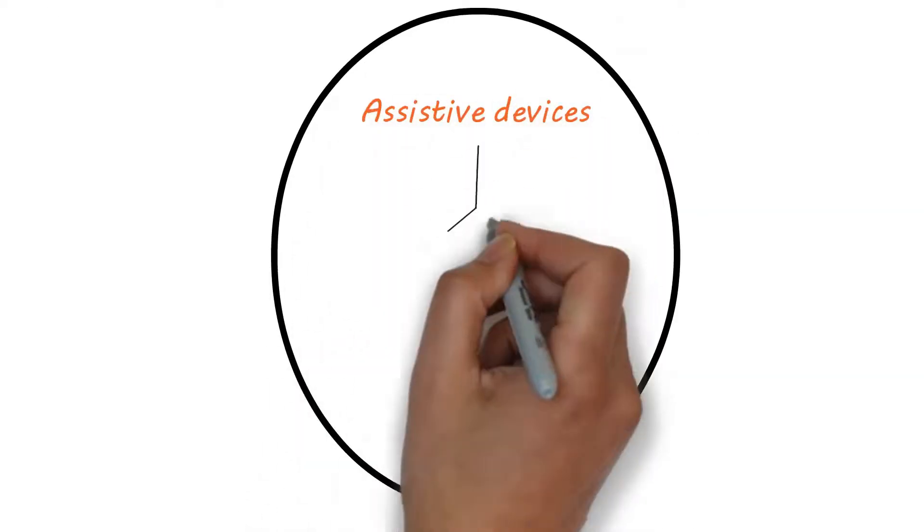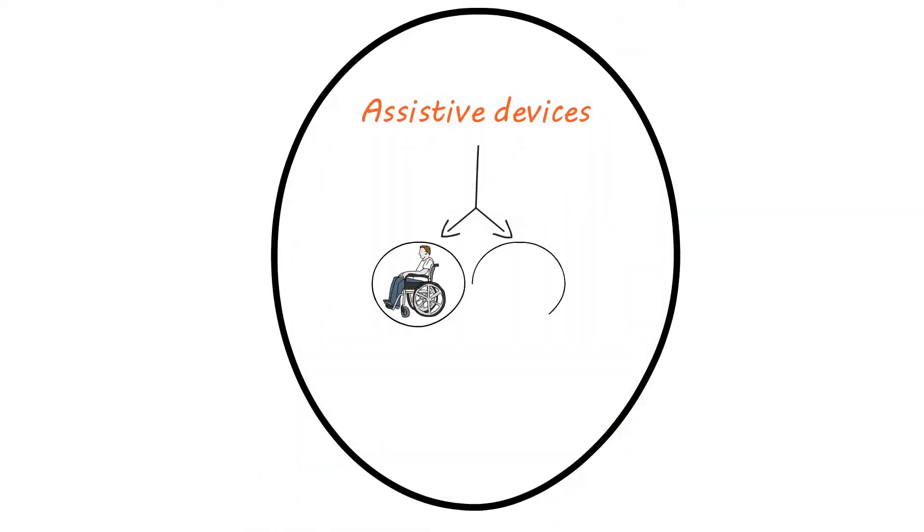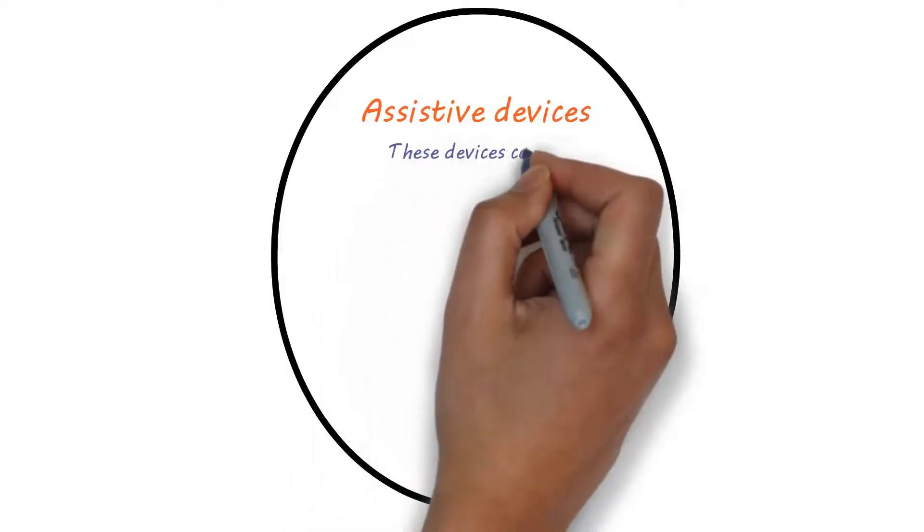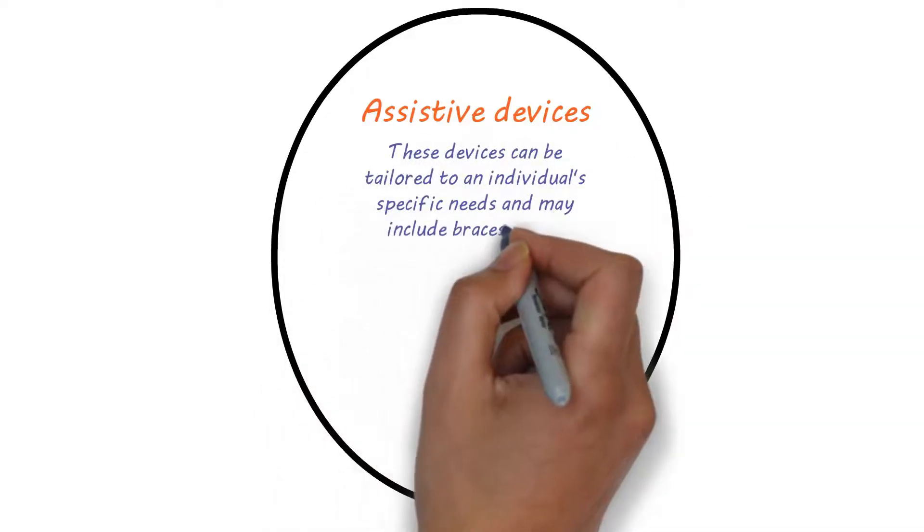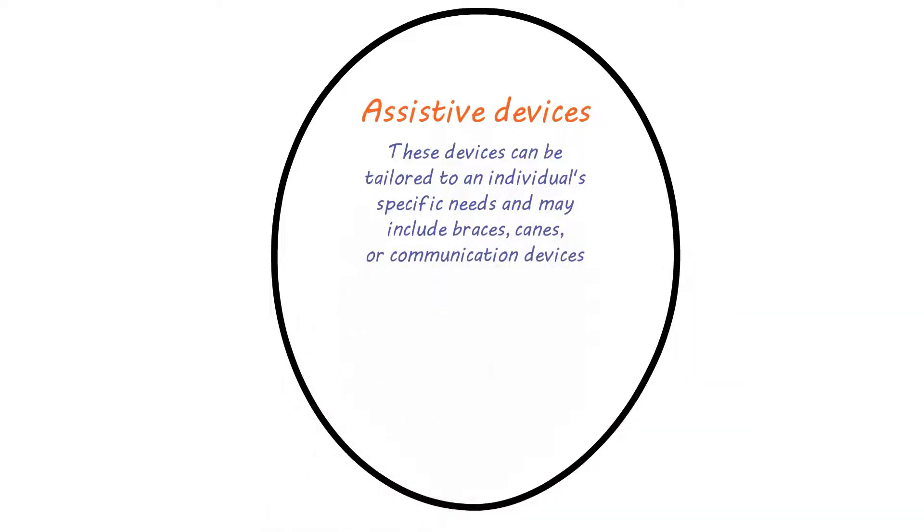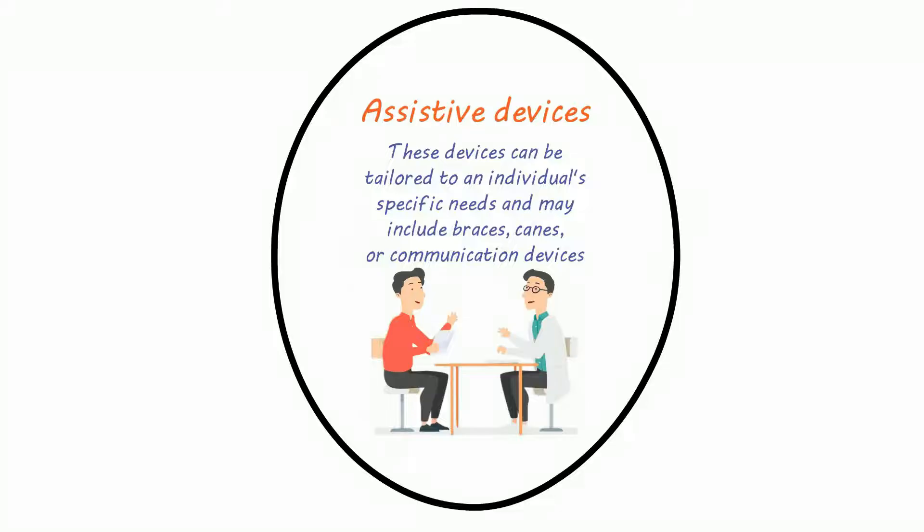Assistive devices, such as mobility aids or speech therapy tools, can help to improve mobility and communication for individuals with motor neuron disease. These devices can be tailored to an individual's specific needs and may include braces, canes, or communication devices. Your healthcare professional will be able to tell you more about this.